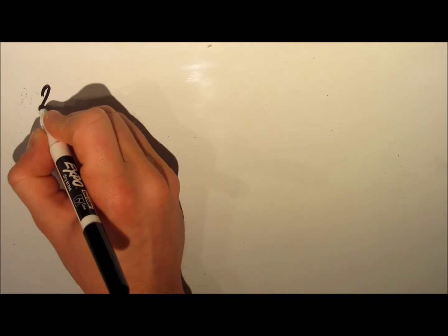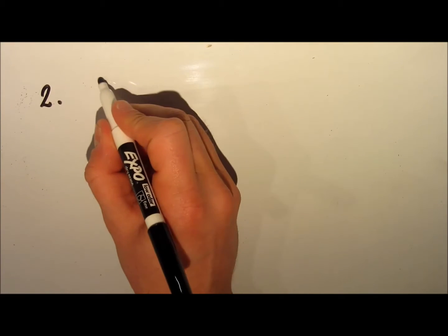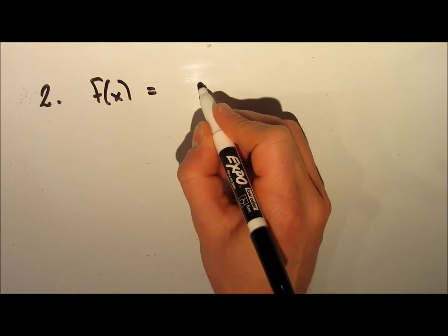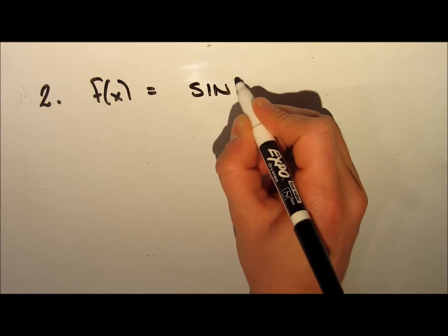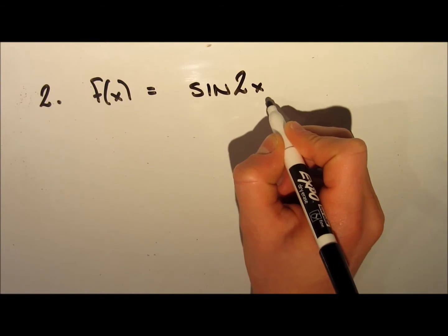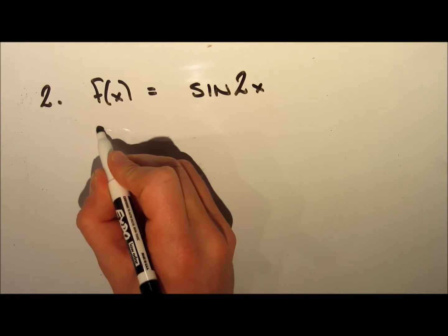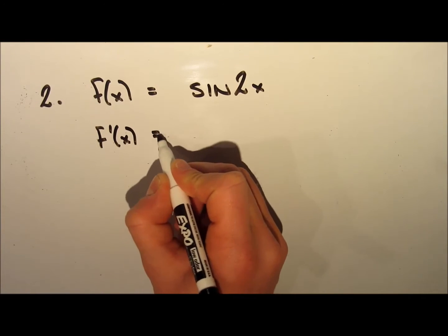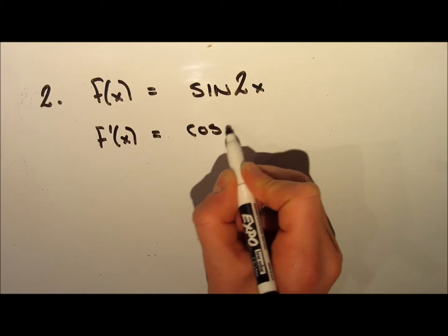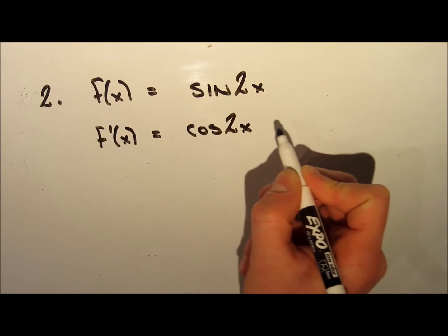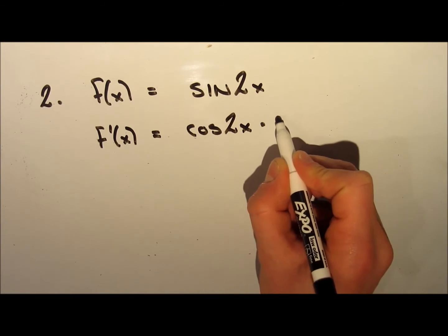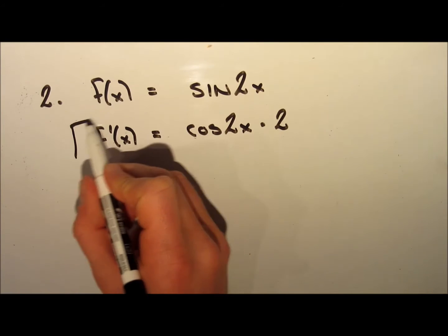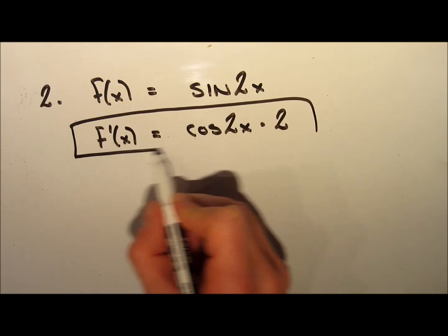Let's take a look at another example. We want to take the derivative of f of x equal to sine of 2x. We can think of sine of 2x as being sine of something, and we know the derivative of sine of something is cosine of something. So that gives us cosine of 2x. Then using the chain rule, we multiply by the derivative of the inside — the derivative of 2x is 2.